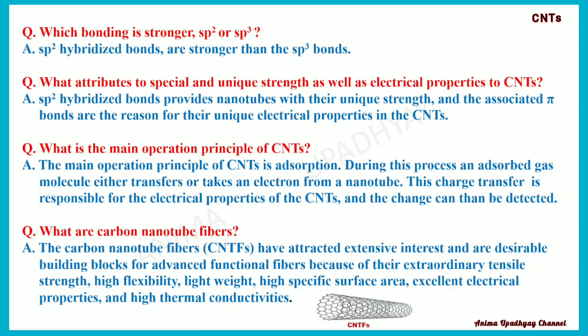What is the main operation principle of carbon nanotubes? The main operation principle of carbon nanotubes is adsorption. During this process, an adsorbed gas molecule either transfers or takes an electron from a nanotube. This charge transfer is responsible for the electrical properties of carbon nanotubes and the change can then be detected.